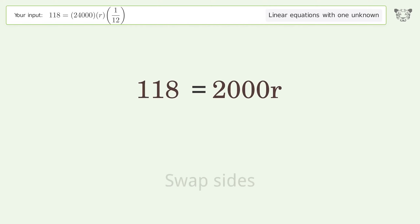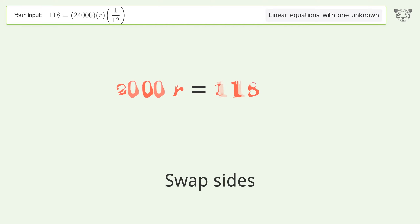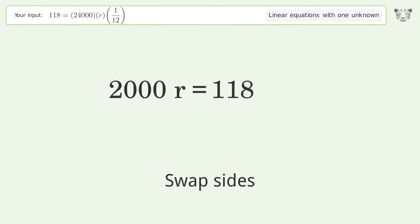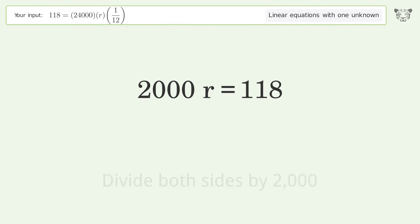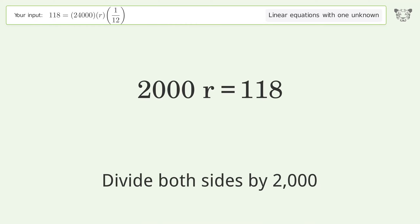Swap sides. Now isolate r by dividing both sides by 2000.